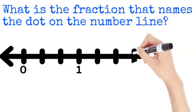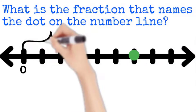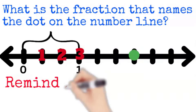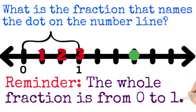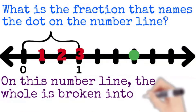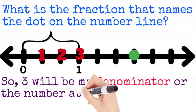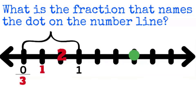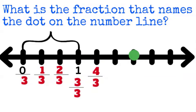You're doing great! Let's try another one. The dot this time is way past the whole — let's see if we can still do this. Yes, we can! One, two, three pieces. The whole fraction is from zero to one. On this number line, the whole is broken into three equal parts. So three will be my denominator, or the number at the bottom. That gives us zero thirds, one third, two thirds, and three thirds, which is the same as a whole.